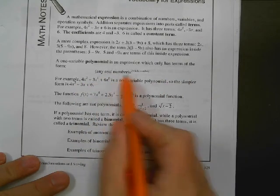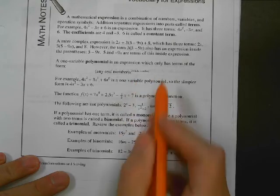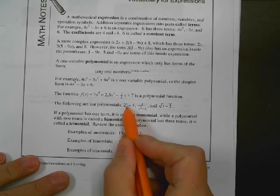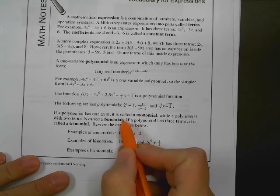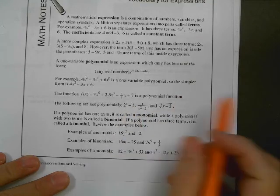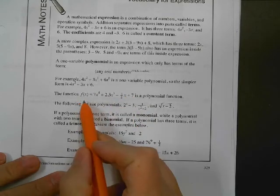So these would be terms. So a polynomial is an expression which only has terms of the form, any real number, and then x to some power. So you can't have two to the x. That would not be a term or wouldn't be a polynomial. You can't have that. All right.